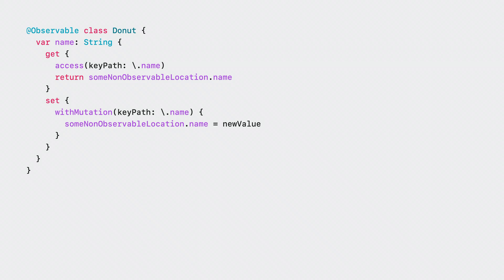This is how observation synthesizes access to properties normally. Except here, we've rewritten those custom access points manually so that the non-observable location can be read and stored. Most of the time, these types of manual cases are not needed because most properties of models are composed from other stored properties.